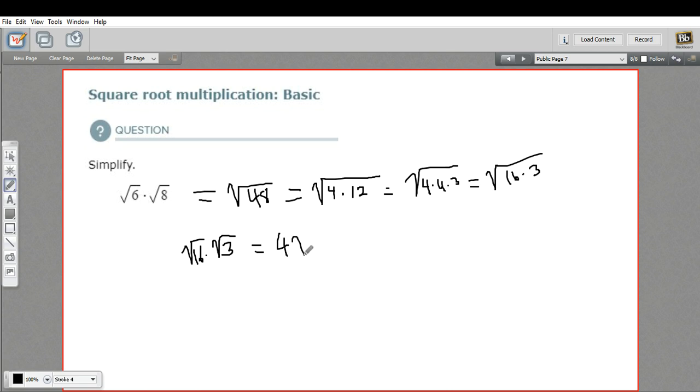So we get 4 times the square root of 3, and we can just write them next to each other and the times is understood. And that is as simple as it becomes. So that is a little bit of review that we can do with square root multiplication.